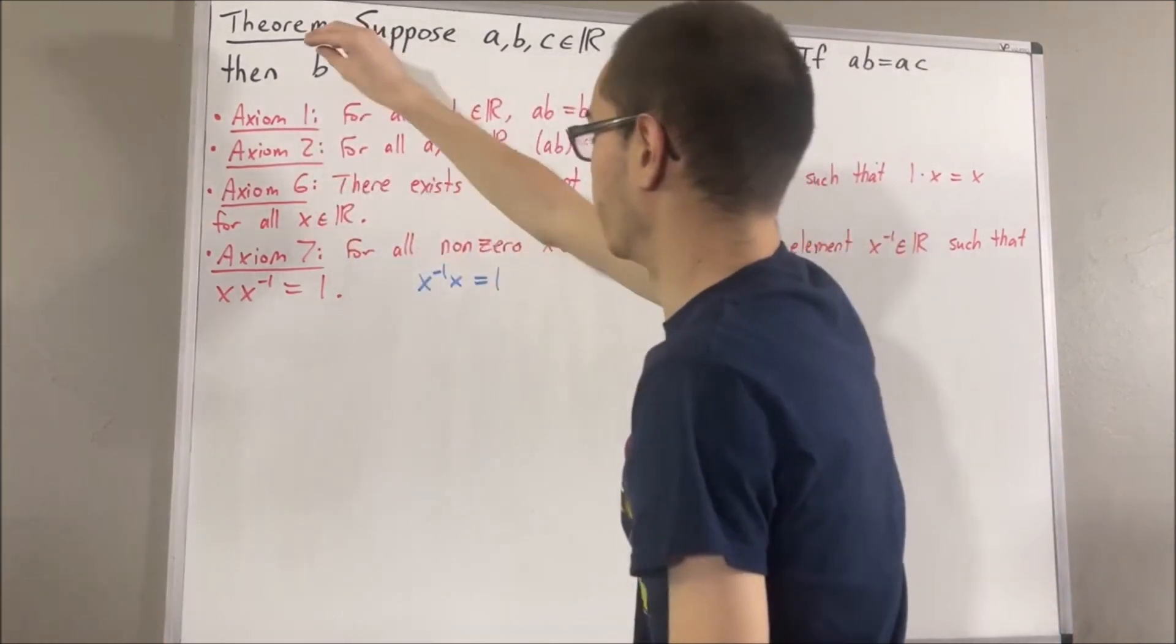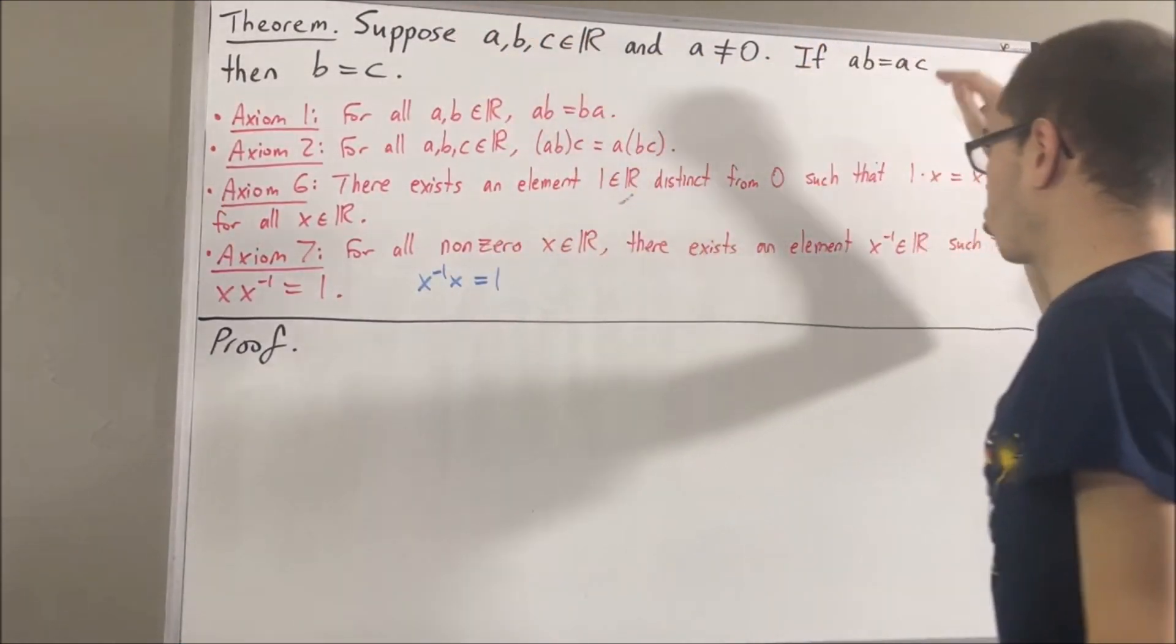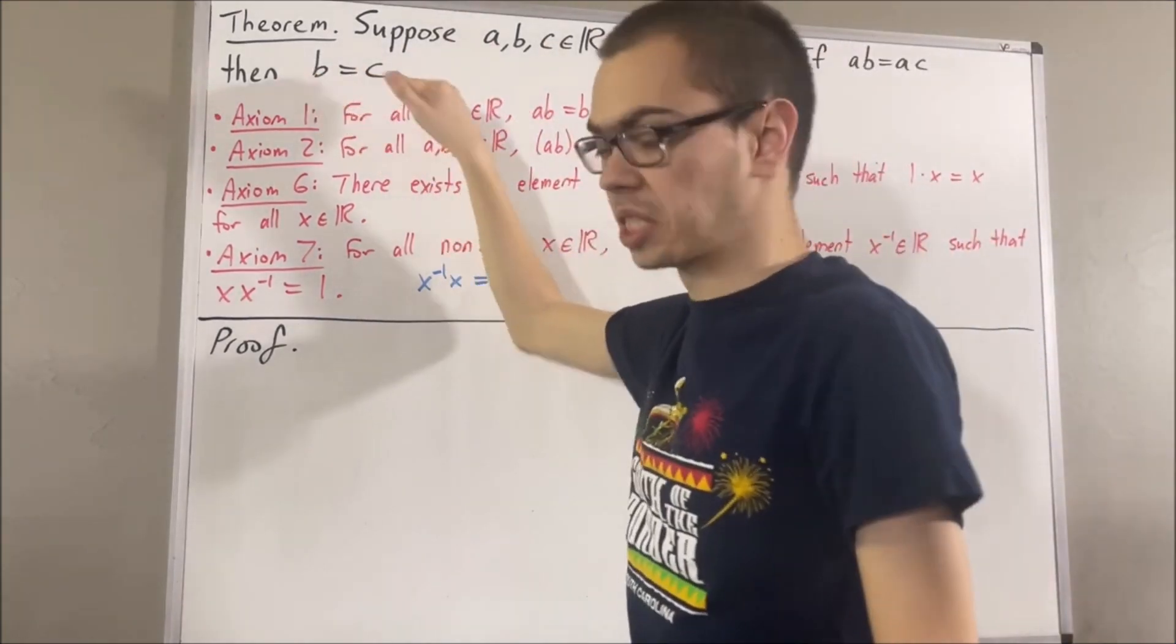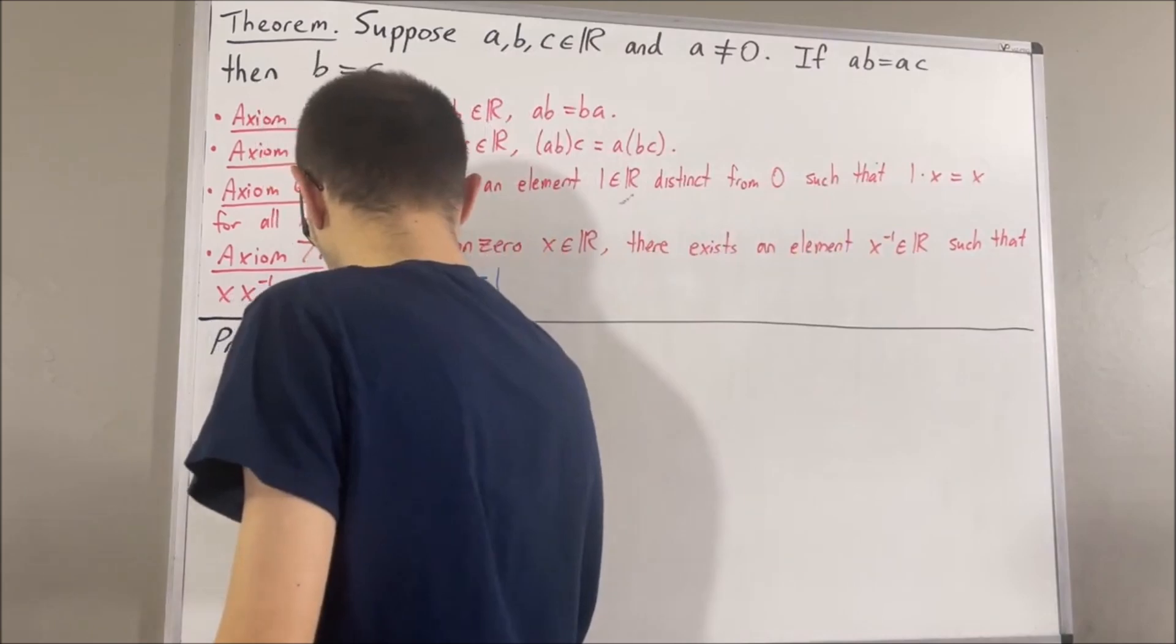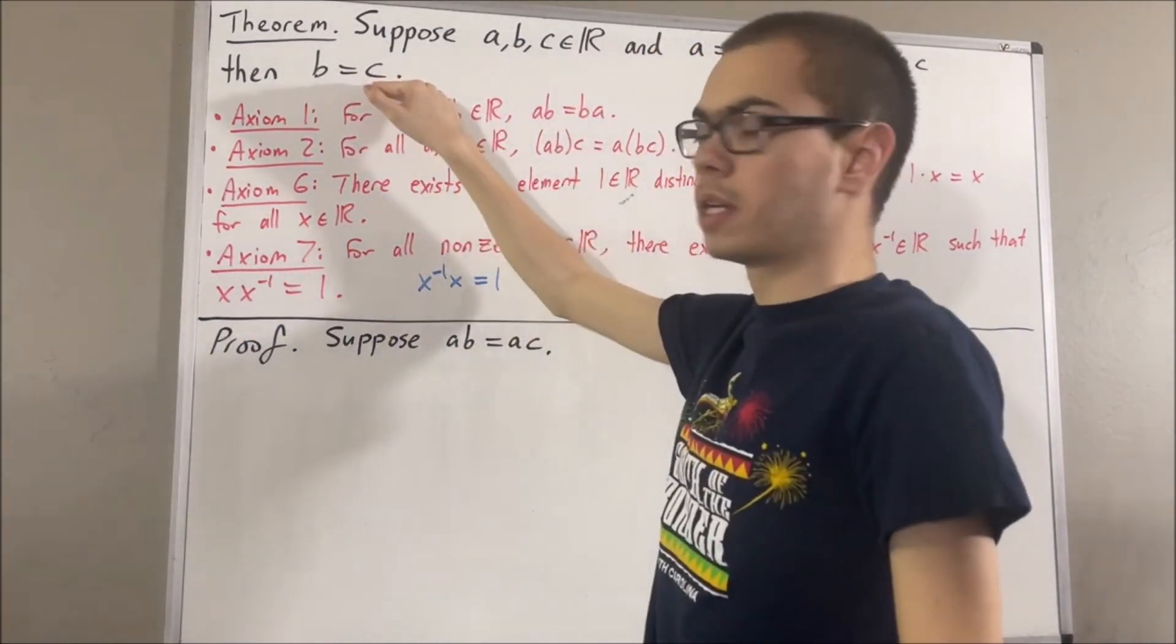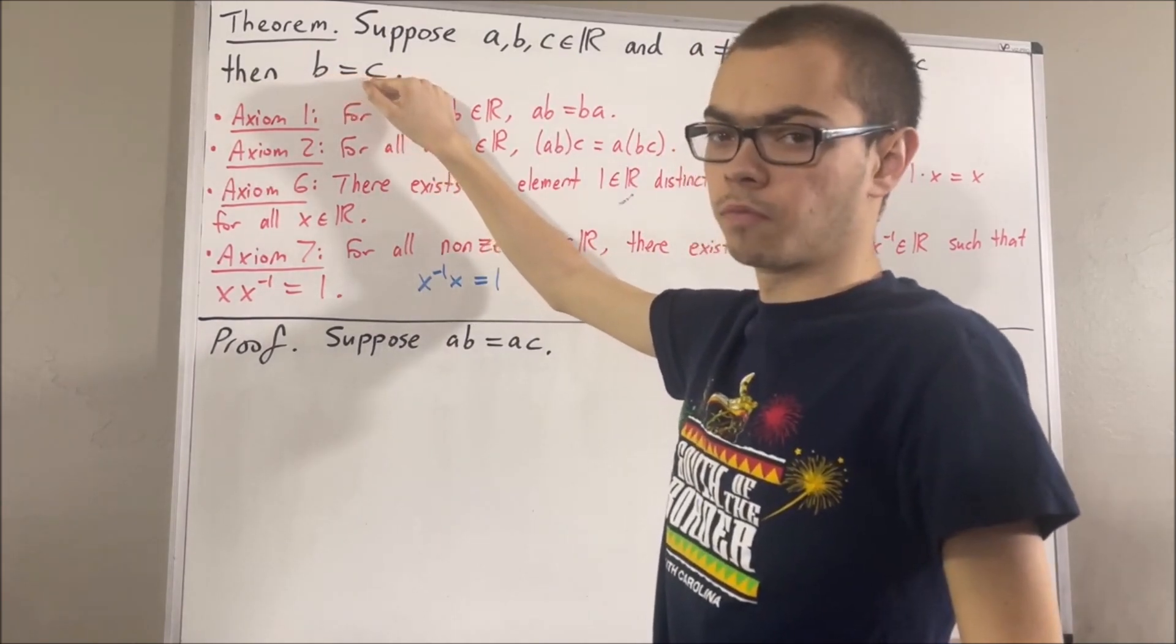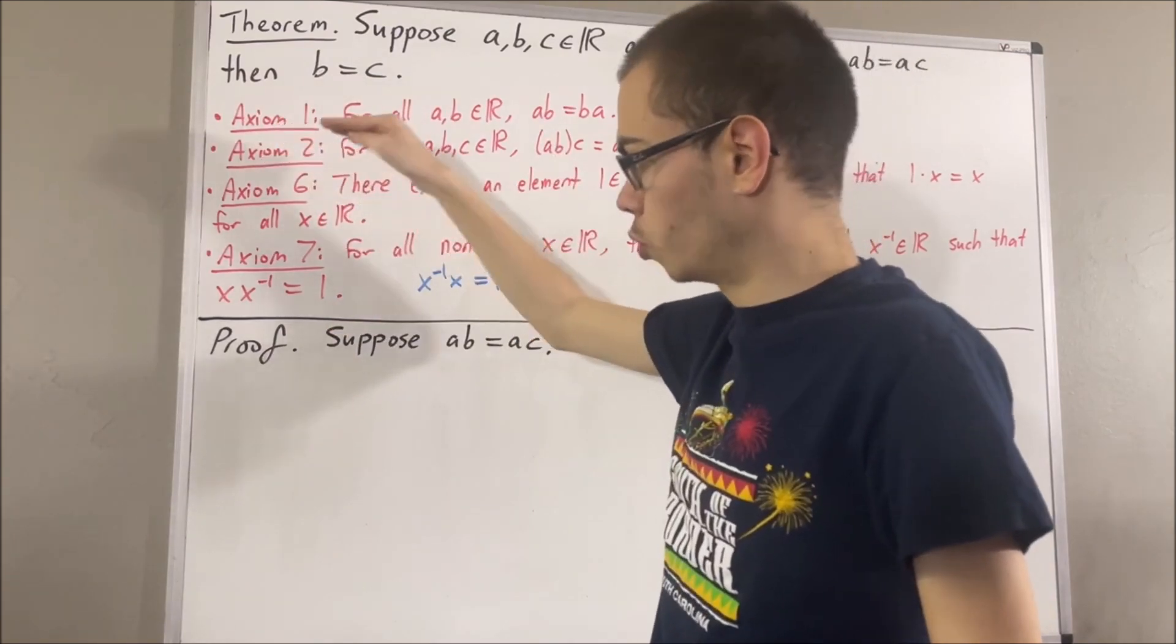Okay, so now let's get into proving this theorem. To prove the theorem, we're trying to prove if AB is equal to AC, then B is equal to C. So, let's suppose AB is equal to AC. From here, the whole goal is to show that B is equal to C. And we're going to show that B is equal to C through a chain of equalities. And through this chain of equalities, we're going to be applying axioms 1, 2, 6, and 7.